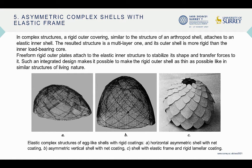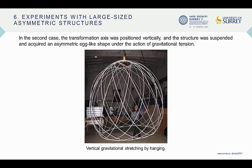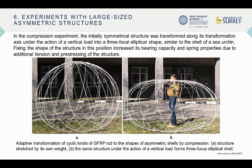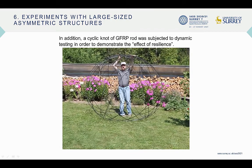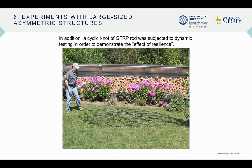The resulting structure is multi-layer, with its outer shell more rigid than the inner load-bearing core. In experiments with large-sized asymmetric structures, cyclic knots made of elastic material CFRP were subjected to tests of stretching and compressing. The additional stress allowed the structure to resist deformations under its own weight and maintain a given asymmetric shape. In the compression experiment, the initially symmetrical structure was transformed into a free focal elliptical shape similar to the shell of a sea urchin. A cyclic knot of GFRP rod was also subjected to dynamic testing to demonstrate the effect of resilience.